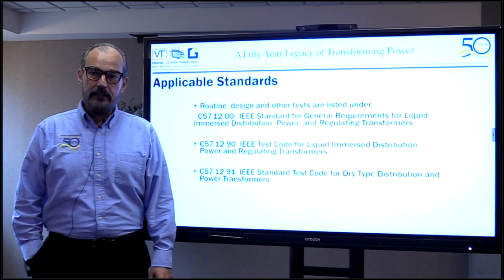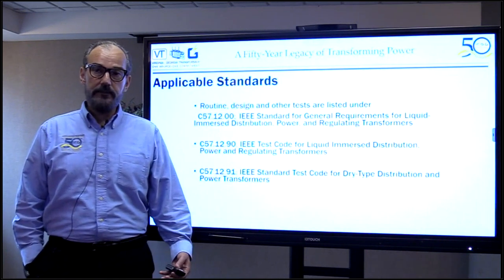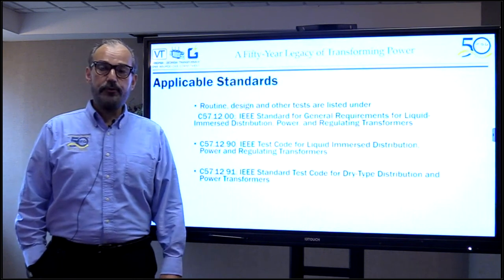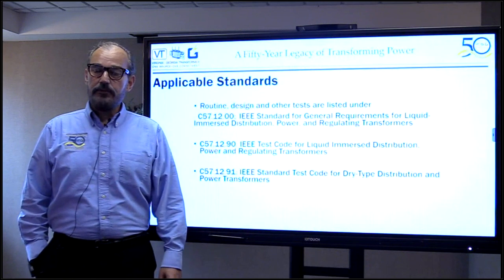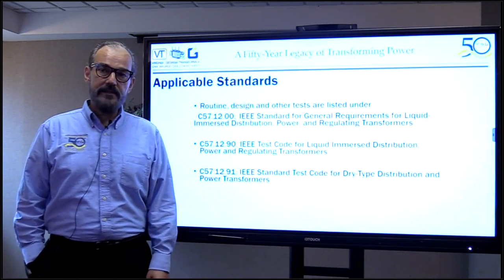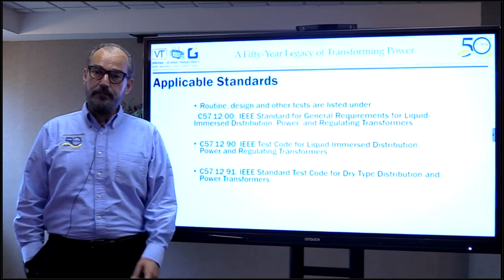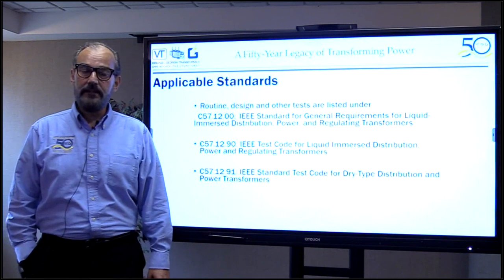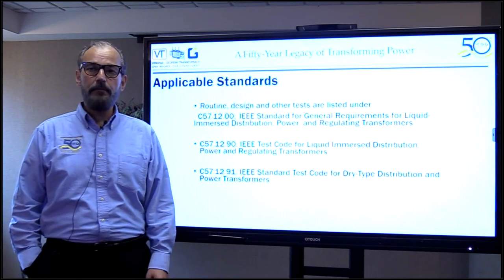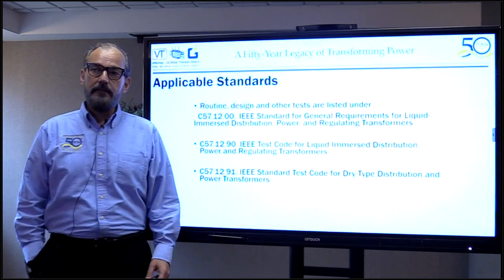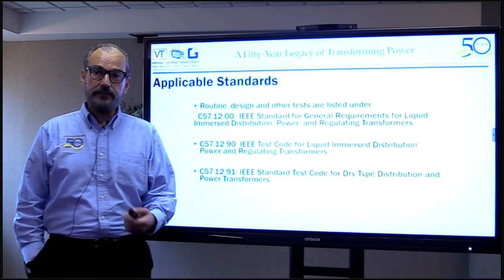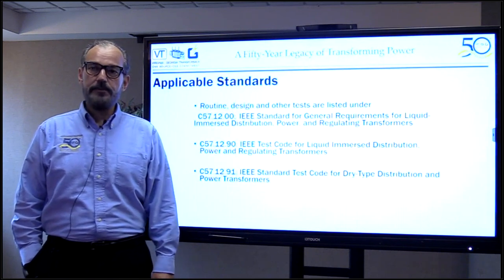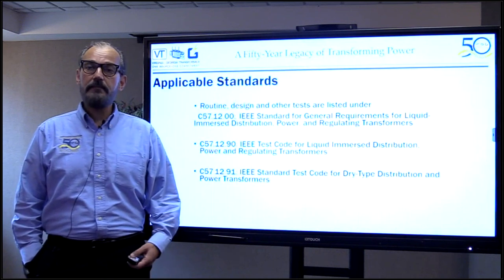During my last webinar in April, I talked about applicable IEEE standards and how we group them. Today we're going to be focusing on C57-1200 and C57-1290. C57-1291 is the test code for dry-type distribution and power transformers. These two standards talk to each other when it comes to testing power transformers, so we will be going back and forth between them.